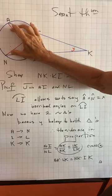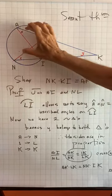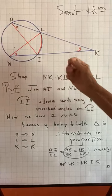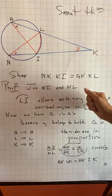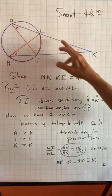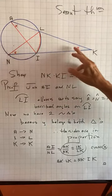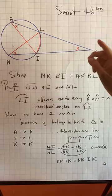This angle is common, so this becomes the key to be able to prove that the triangles are similar. Because we have two angles of one triangle equal to two angles of another, the triangles are similar.